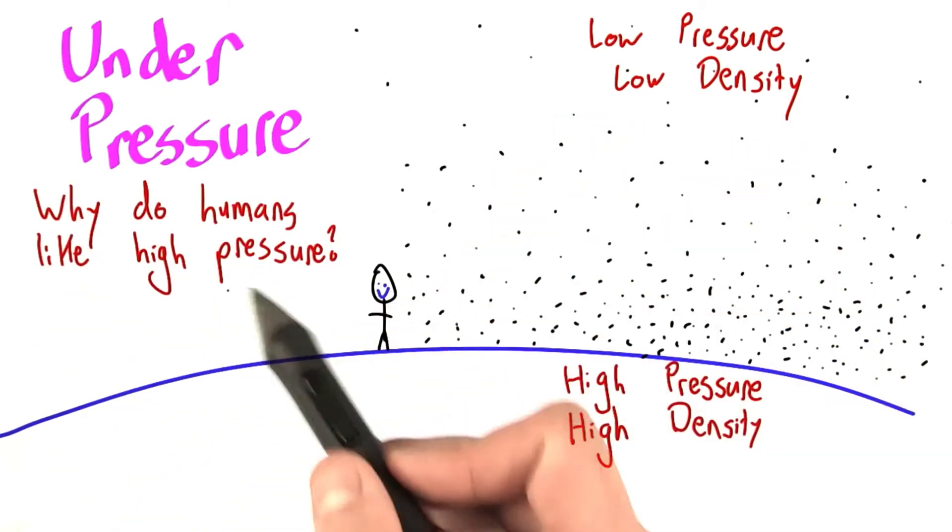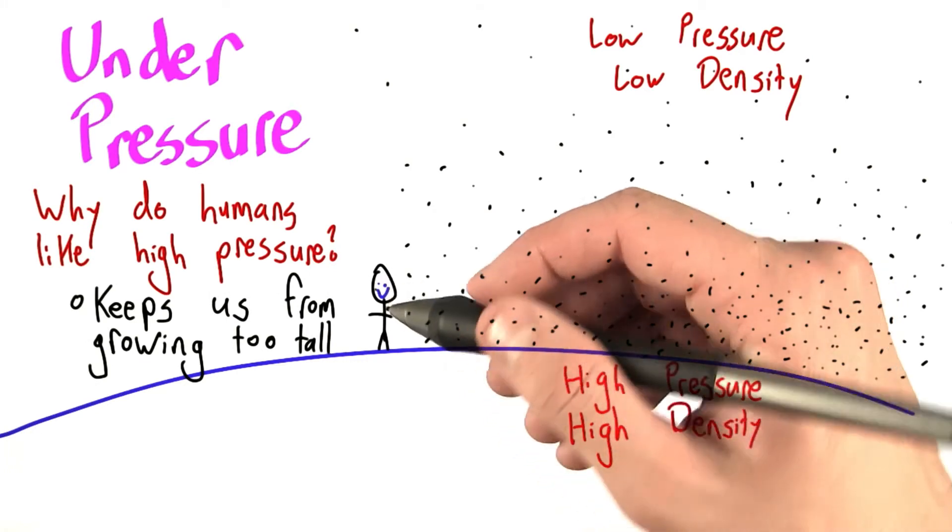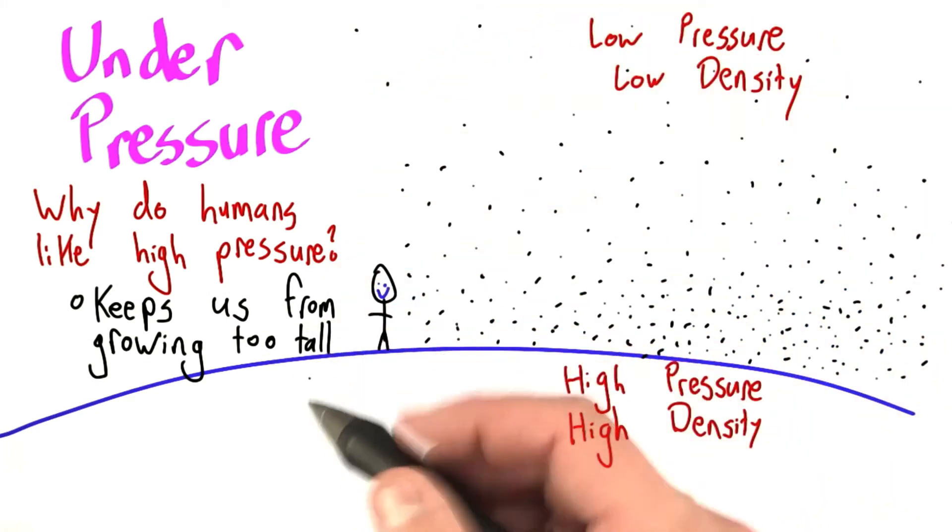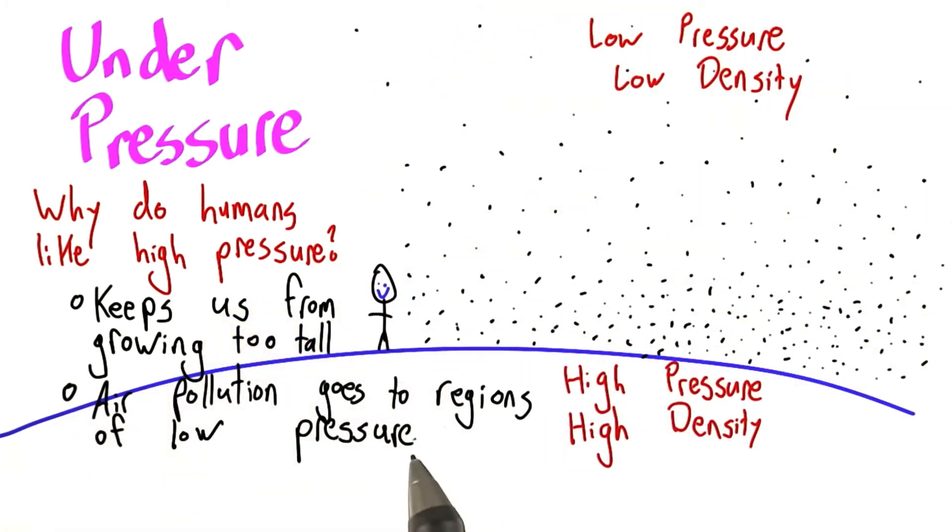So I want to know, why do humans like high pressure so much? Maybe the weight from all that air above us keeps us from growing too tall. Maybe air pollution tends to go to regions of low pressure. Or maybe it means that there's lots of oxygen for us to breathe. Go ahead and choose the best answer.